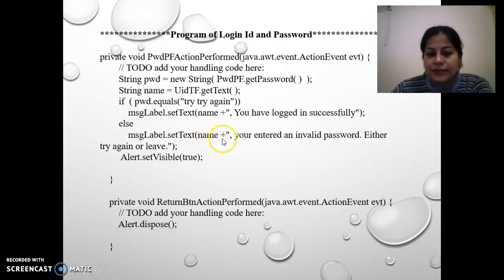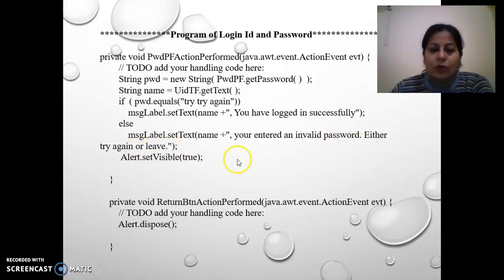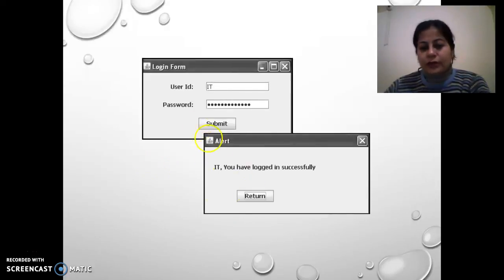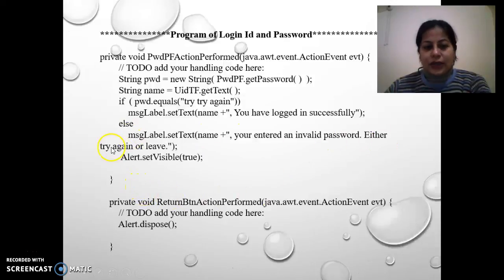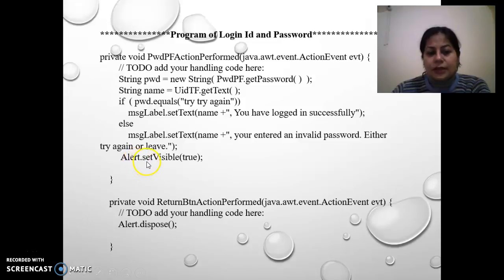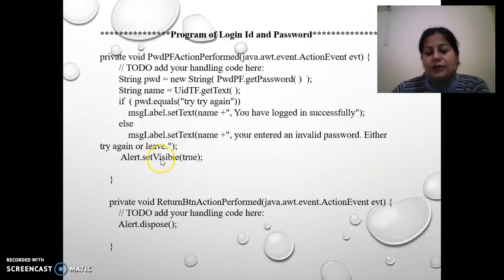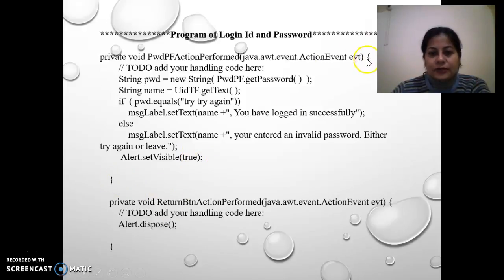In the else case, if a wrong password is entered, the message will say: name + ' you entered an invalid password. Either try again or leave.' There will be two buttons — try again and leave — instead of just one. Then alert.setVisible(true) is called to show the alert dialog box, and the function is closed with the closing curly bracket.